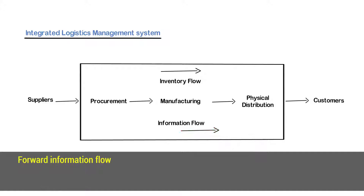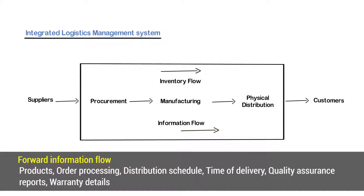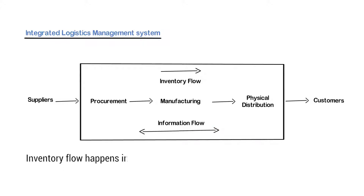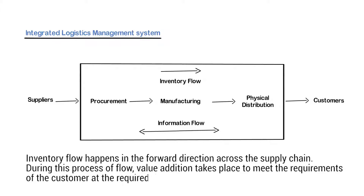The forward information flow provides information such as availability of products, order processing, distribution schedule, time of delivery, quality assurance reports and warranty details across the supply chain. Inventory flow happens in the forward direction across the supply chain. During this process of flow, value addition takes place to meet the requirements of the customer at the required time.